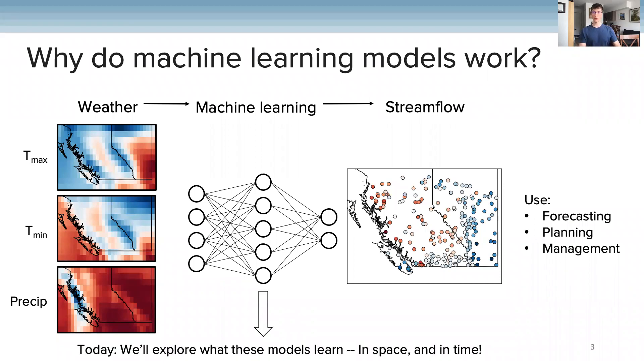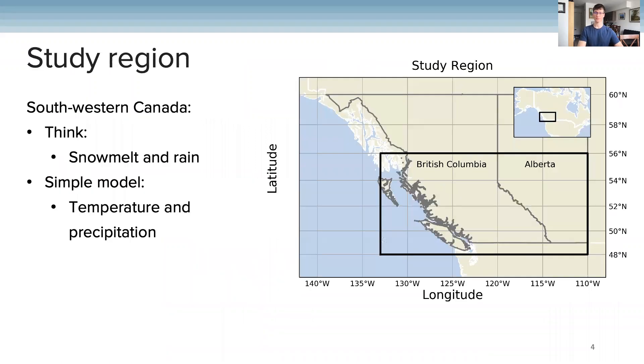Today we'll explore what these models are learning, both in space and through time. Our study region is this portion of southwestern Canada through BC and Alberta, where snowmelt and rain are two very important inputs to the hydrological system.